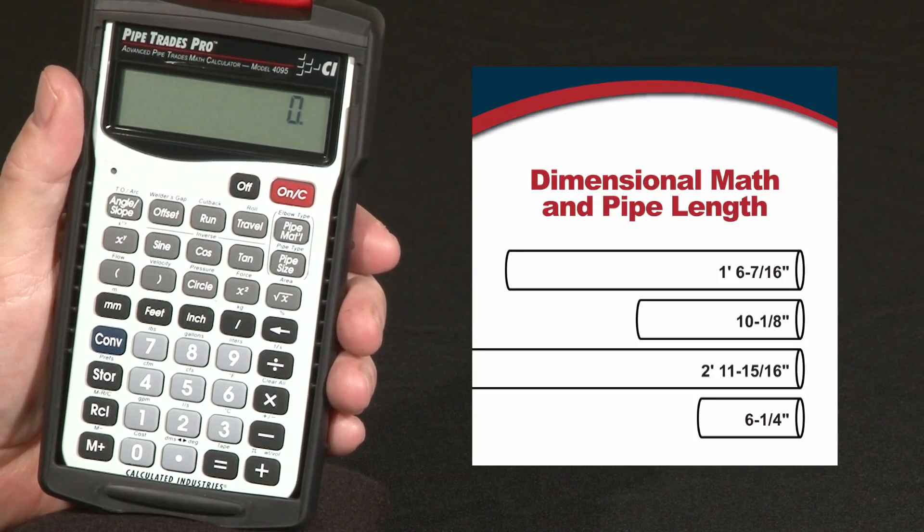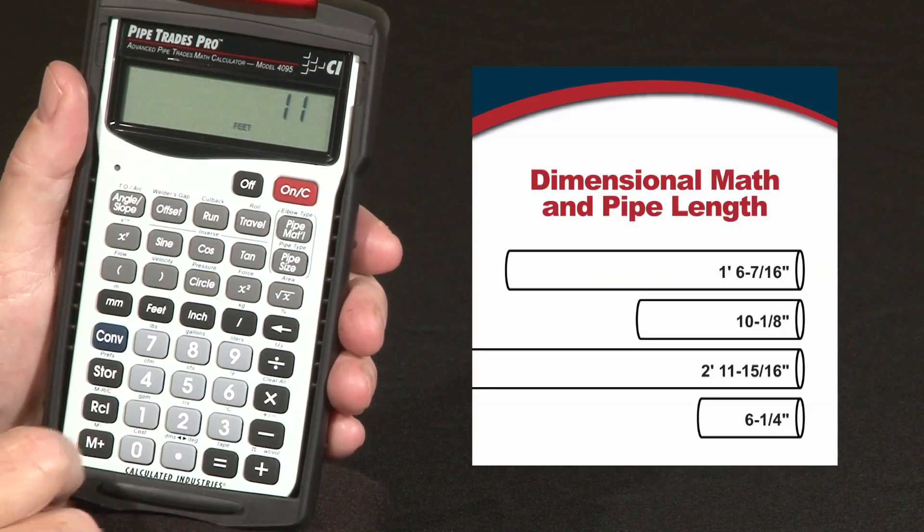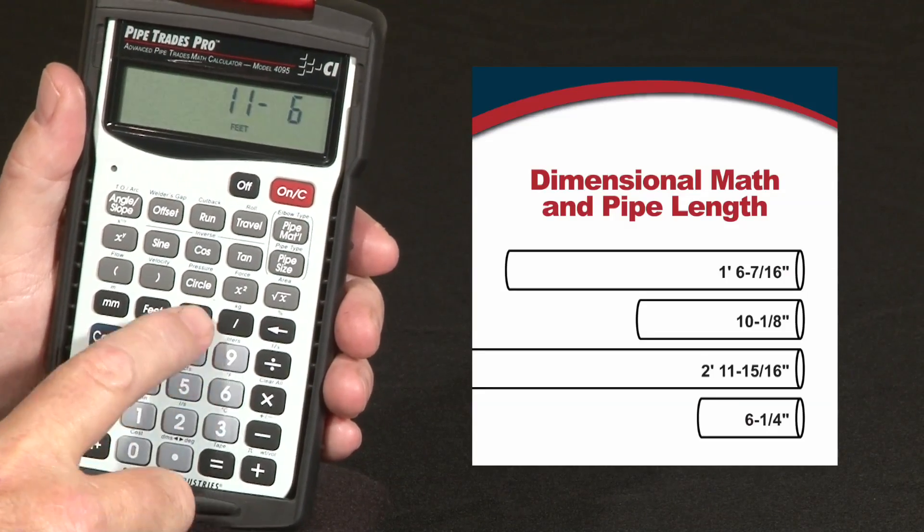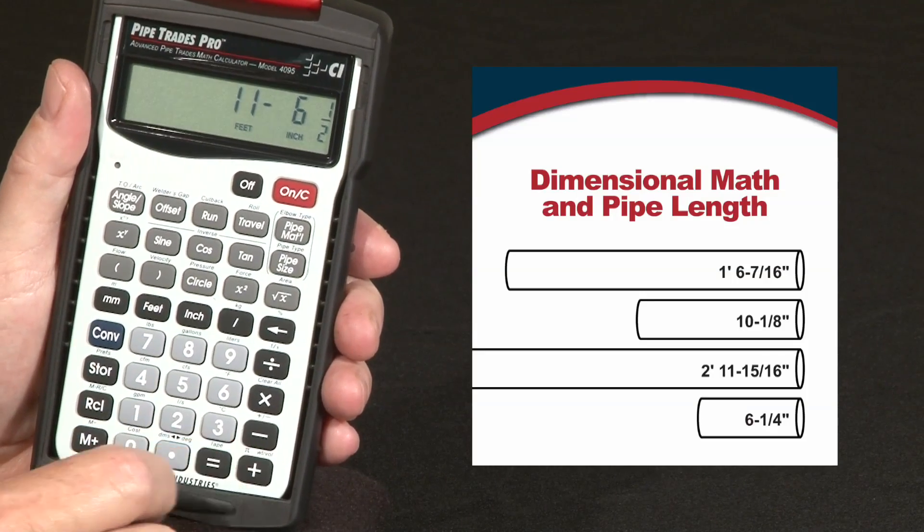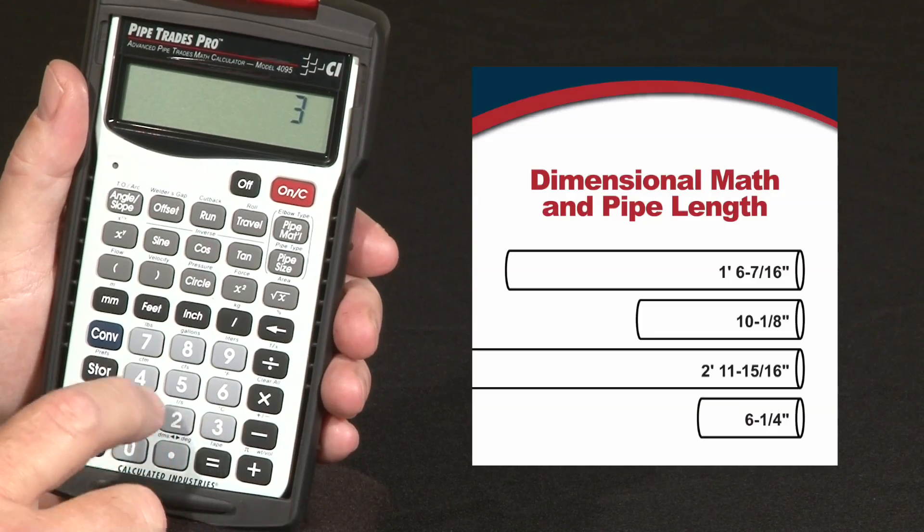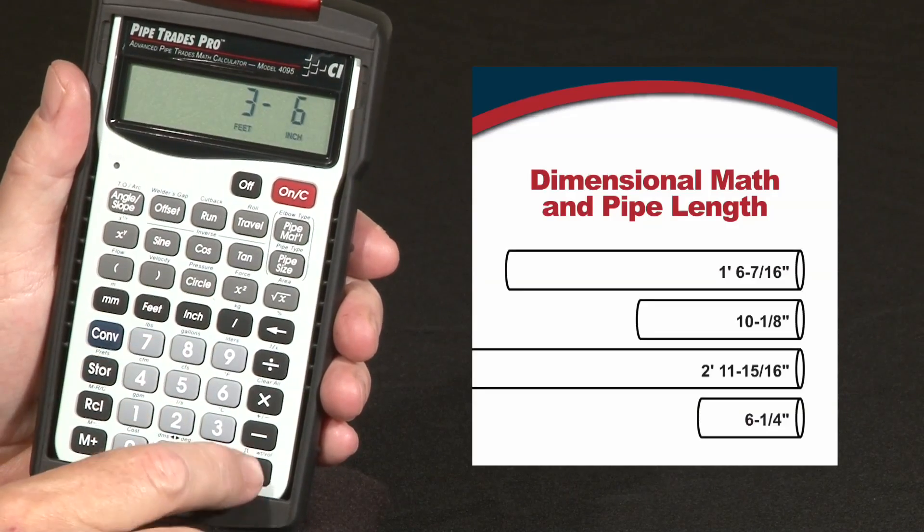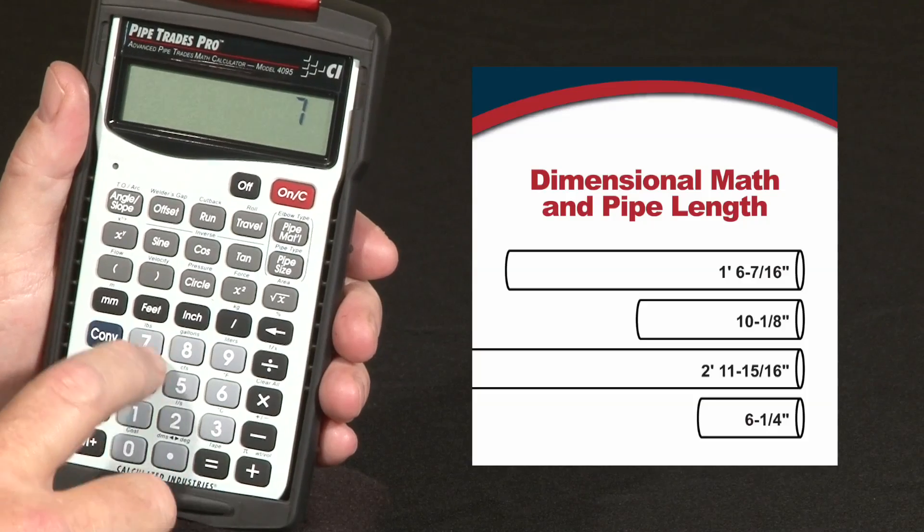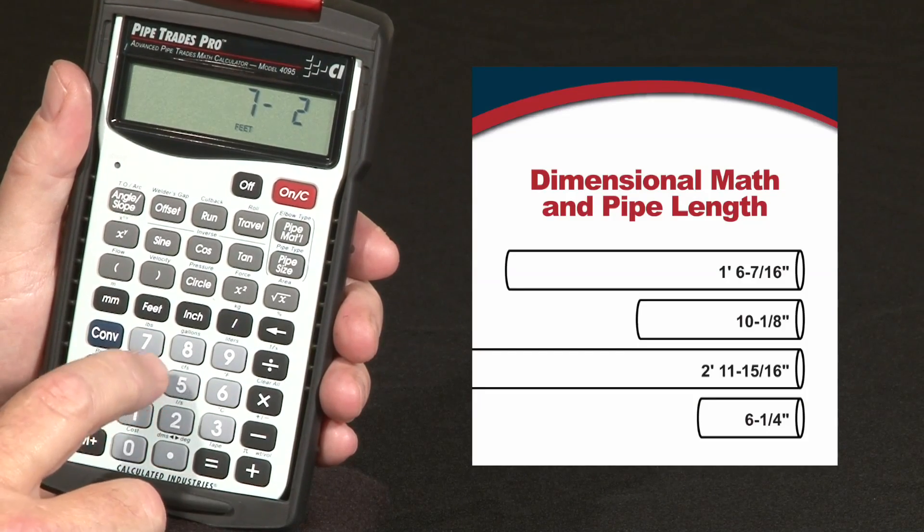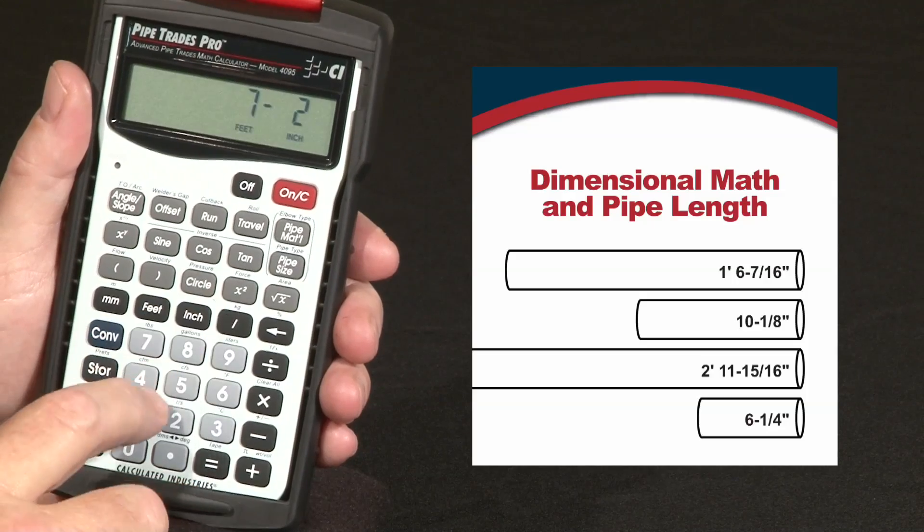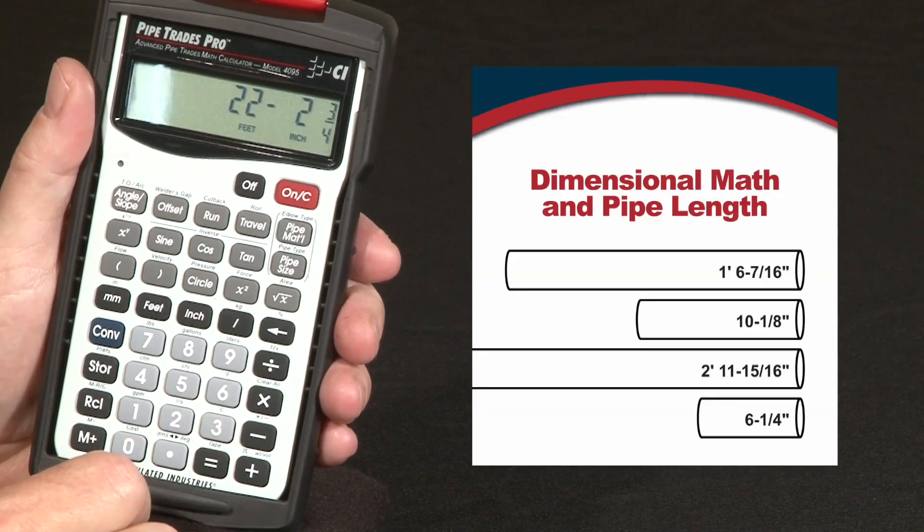So let's just say 11 feet 6 and 1/2 inches, plus 3 feet 6 inches, plus 7 feet 2 and 1/4 inches, and then hit the equals key. And there it is, 22 feet 2 and 3/4 inches, just like that.